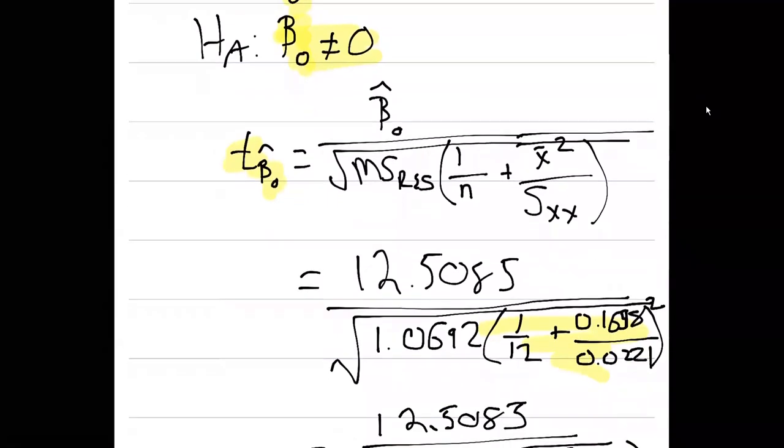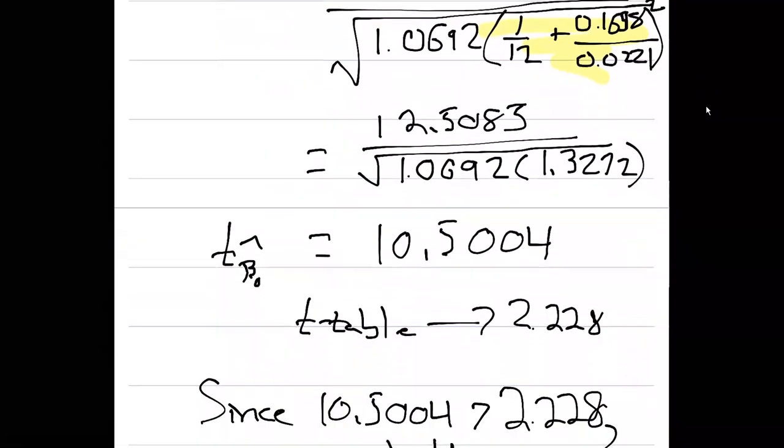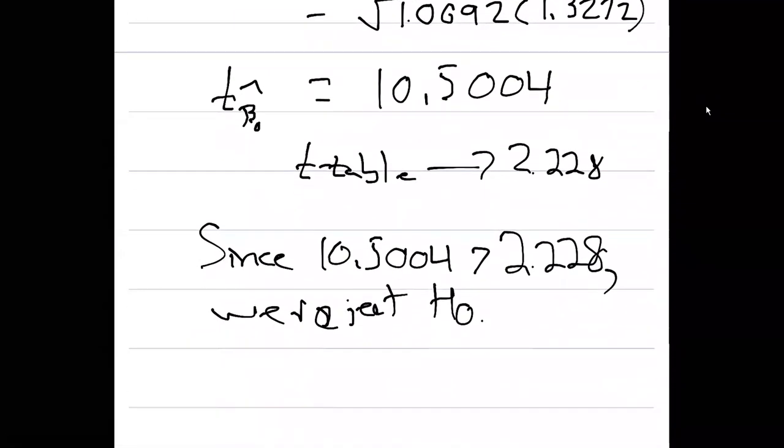So there you have it. That's how we might test to see whether or not beta zero and beta one are any good. This is a common way that we can do it. In R, we'll get output that directly correlates to this and should be the same output. We'll see this when we do the calculation in R as well. Thank you.